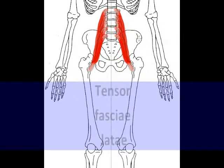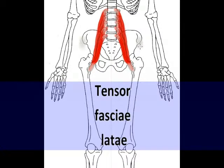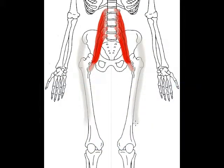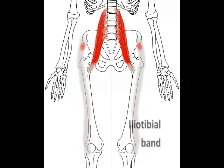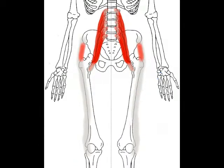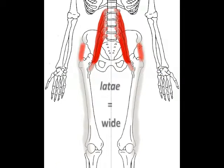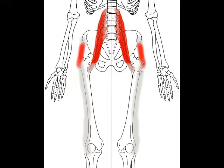Our next muscle is the tensor fasciae lati. Tensor means to make tense. Fasciae means of the band, which is a reference to the location of this muscle embedded in the iliotibial band, the deep fascia, the dense connective tissue along the lateral thigh. Lati means wide, which is a reference to the large width of the iliotibial band around the thigh.